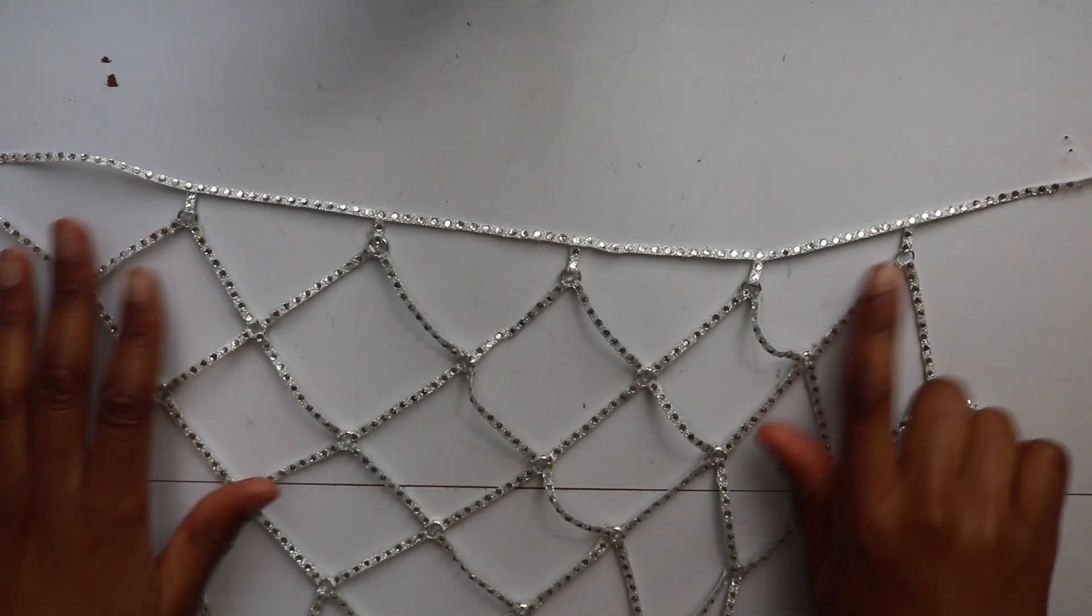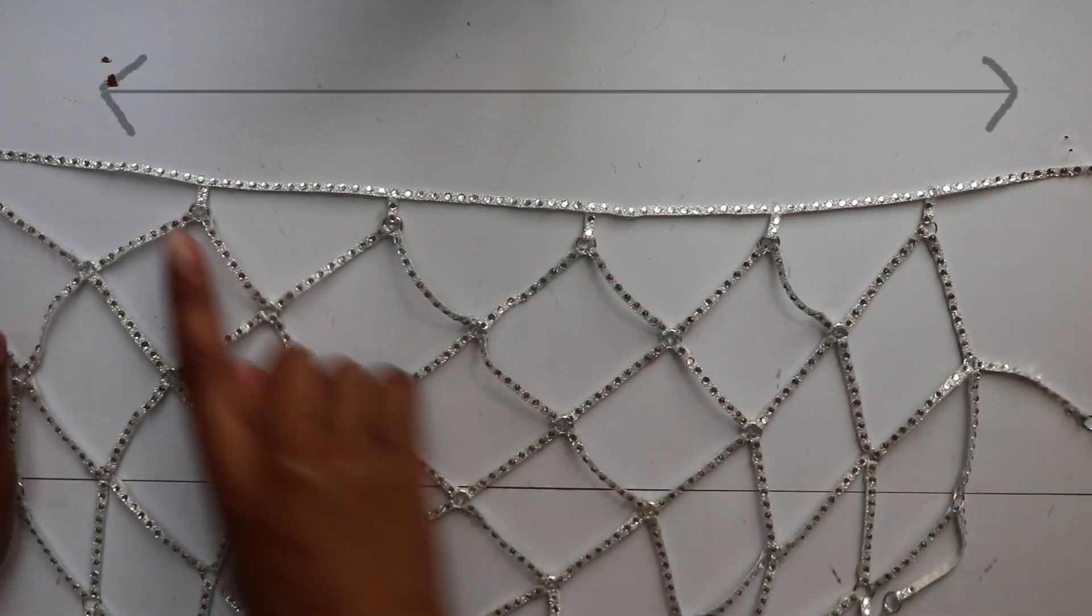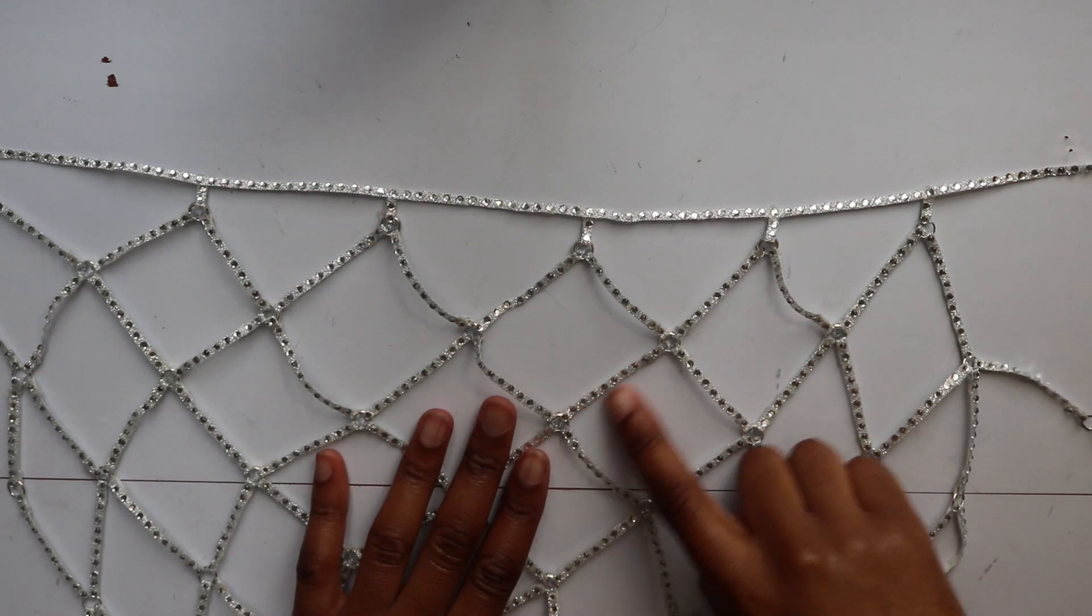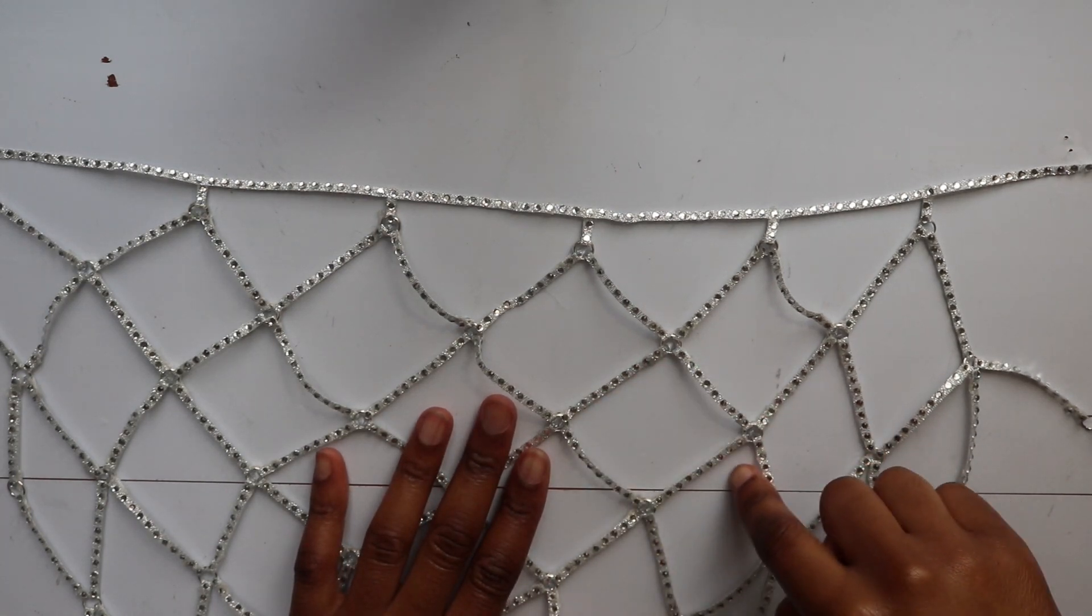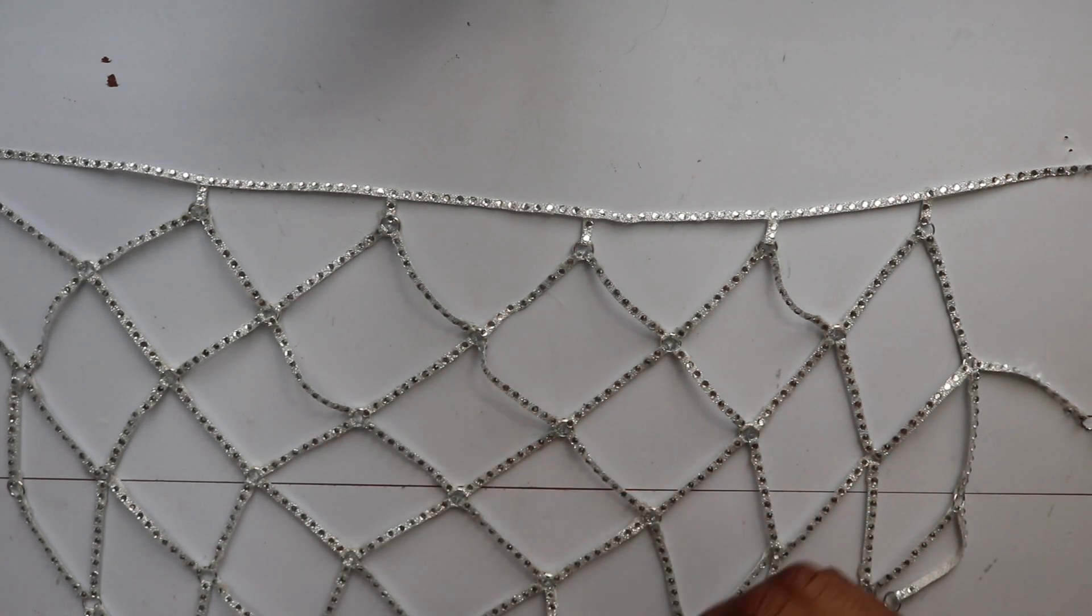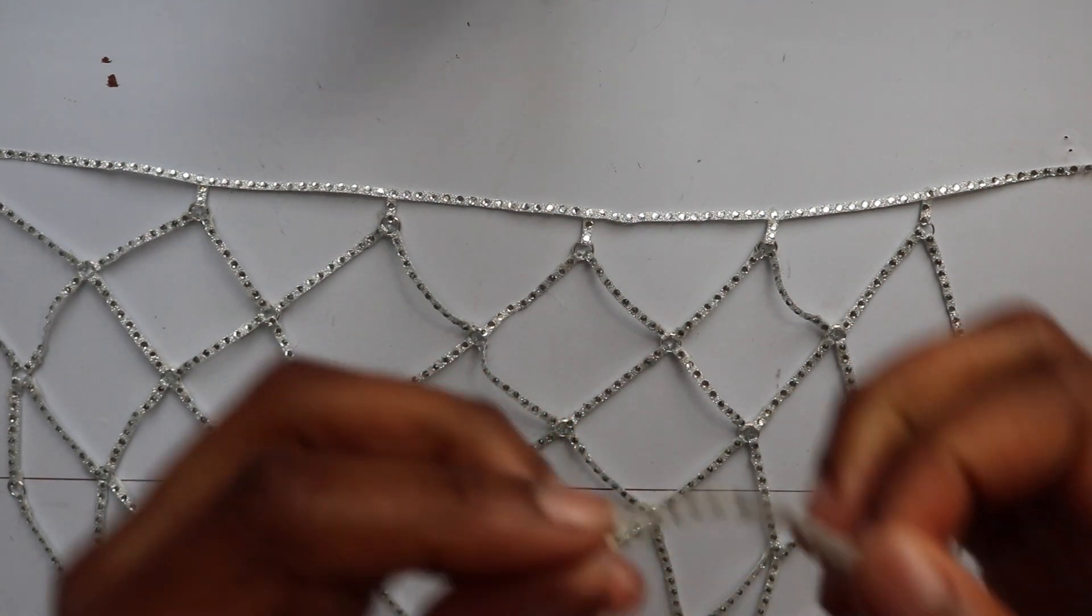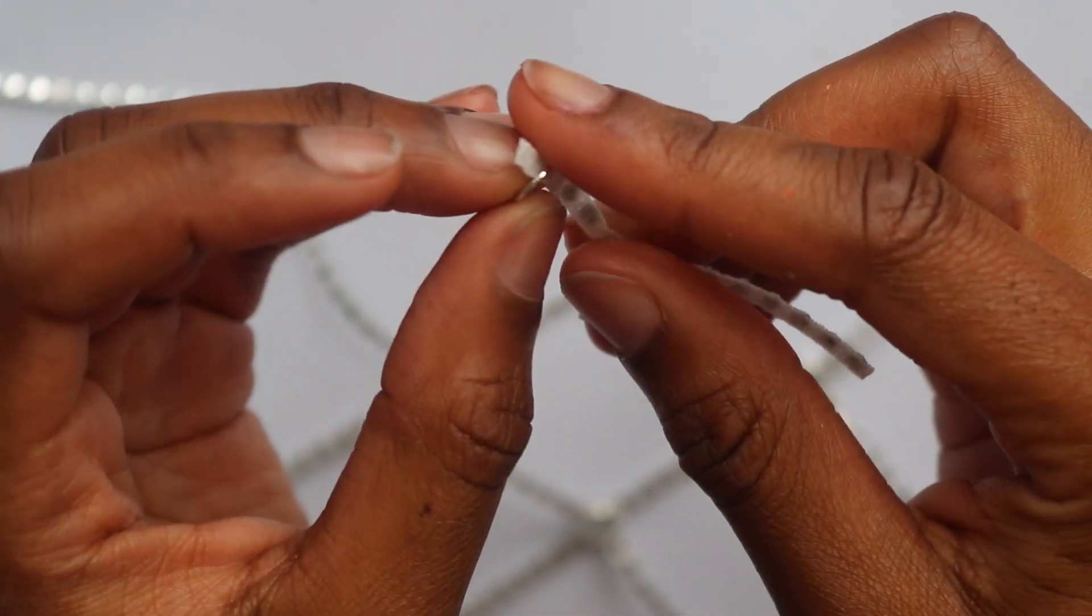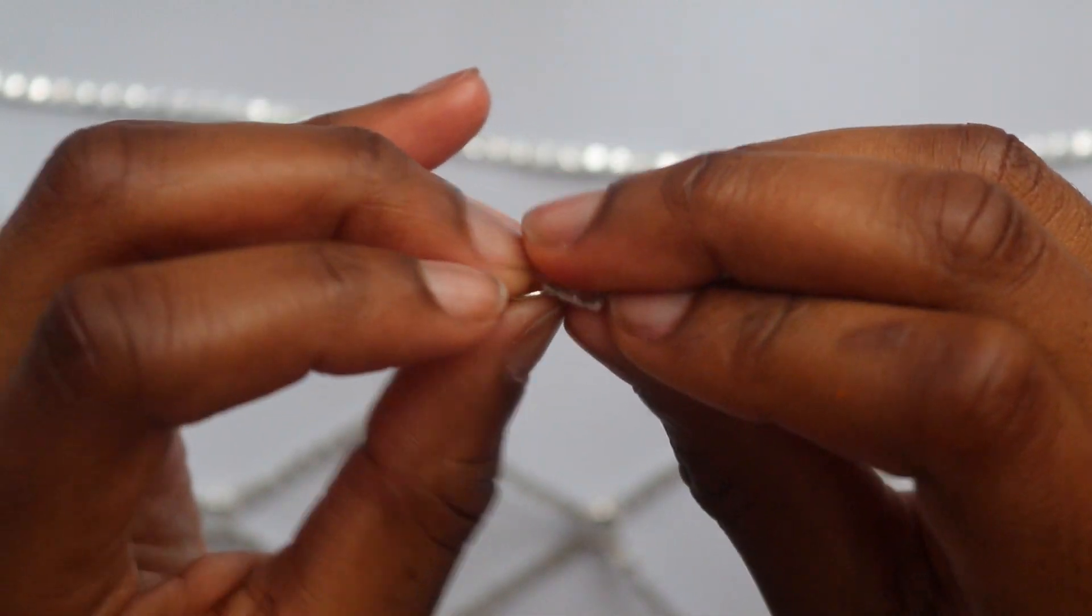Here I'm just taking the measurement from my waist and cutting a row of rhinestone to that measurement. Then I'm going to figure out what measurement to use to make my diamonds. For each row that makes up the diamond I think I did one inch and repeated that until all the rows were cut up.